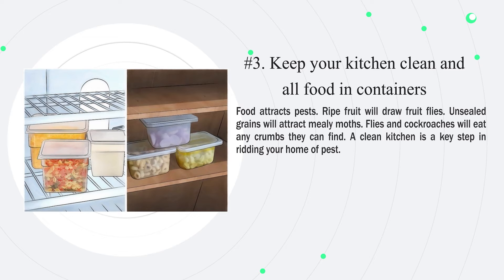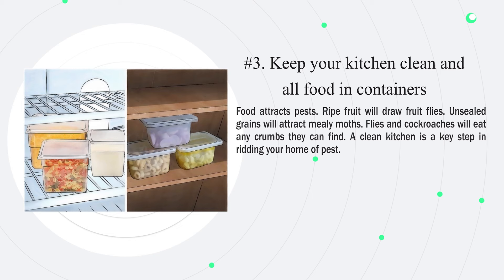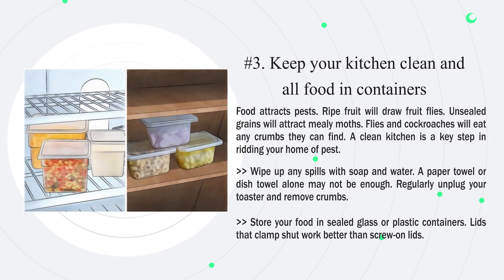Number three: keep your kitchen clean and all food in containers. Food attracts pests — ripe fruit will draw fruit flies, unsealed grains will attract mealy moths, and flies and cockroaches will eat any crumbs they can find. A clean kitchen is a key step in ridding your home of pests. Wipe up any spills with soap and water, as a paper towel or dish towel alone may not be enough.